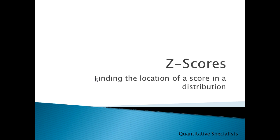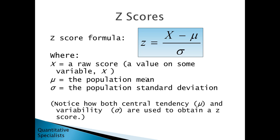In this video we'll take a look at z-scores, or finding the location of a score in a distribution. Z-scores are given by the following formula: z equals x minus mu divided by sigma, or the standard deviation.